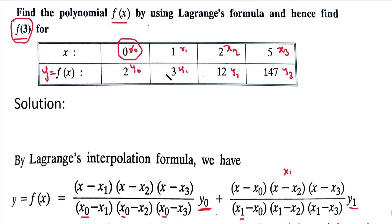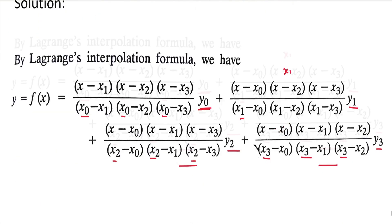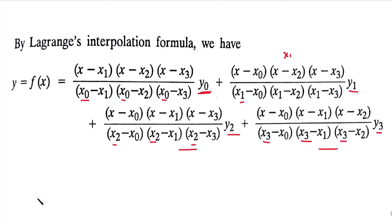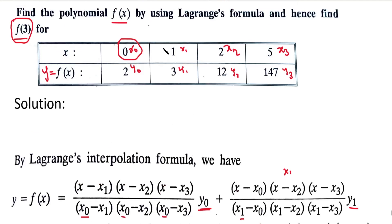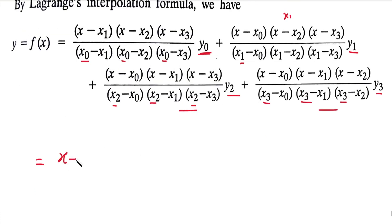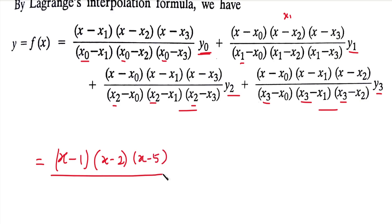So we have x0, x1, x2, x3 and correspondingly y0, y1, y2, y3. These are the values we substitute into the formula. The first term numerator is x minus x1, x minus x2, x minus x3, which is x minus 1, x minus 2, x minus 5, divided by x0 minus x1, x0 minus x2, x0 minus x3.